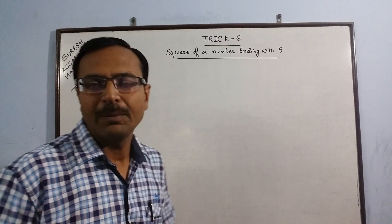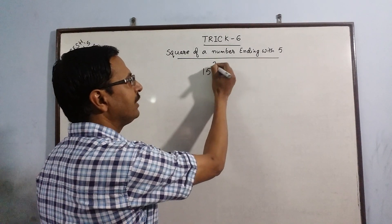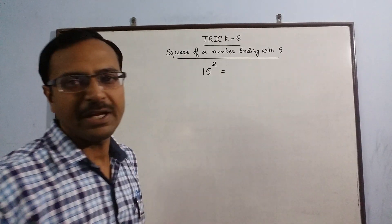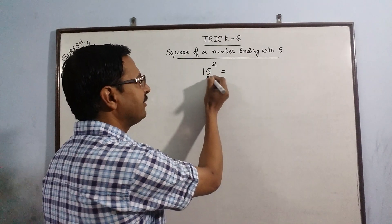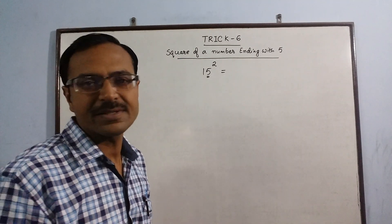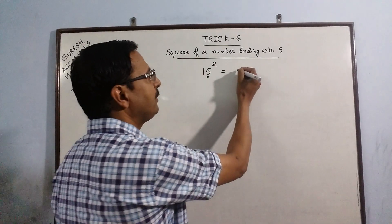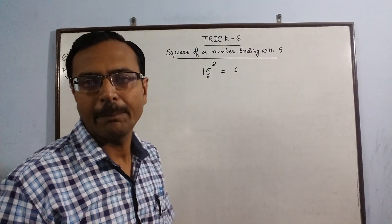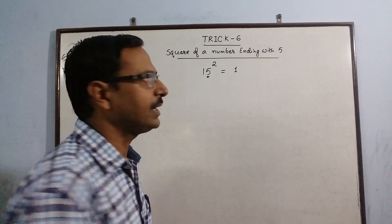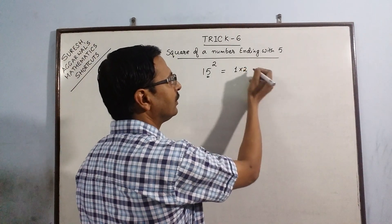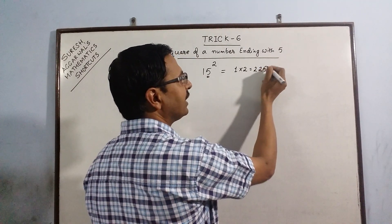So let me demonstrate this by taking a very simple example of 15 and we have to square this number 15. What we do is we just forget this 5 and concentrate only on the number which is left behind, that is 1. Now, we multiply 1 by its subsequent quantity, its successor, that is 2, which gives us 2, and just put a 25 after that.